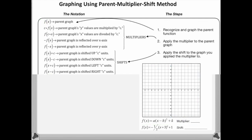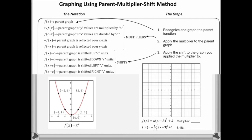The first step when graphing is to recognize and graph the parent function. Since the function we're going to graph has a square — it's raised to the second power — that denotes a parabola, a quadratic function. So we know the quadratic function in its parent form is going to look like this. What I'm going to do is transfer all the points over to the graph — that's our first step.